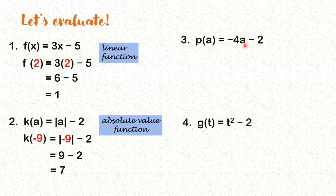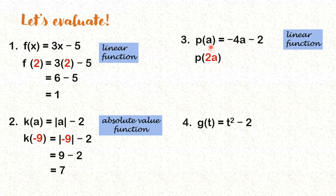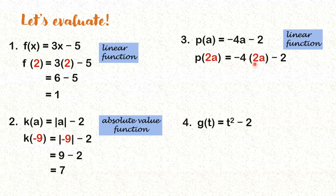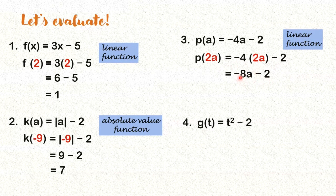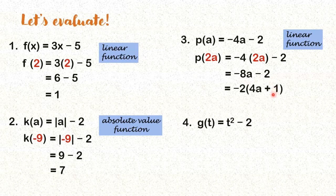Let's now have number 3. What kind of function is this? Kita niyo ba yung variable? Anong exponent niya? 1. So definitely this one is a linear function. We get P of 2A. So yung A na nakikita niyo dito, papalitan lang natin ng 2A — we substitute. So what is negative 4 times 2A? You will have negative 8A. So you have negative 8A minus 2. And then you recall factoring — pwede niyong i-factor out ang negative 2. If you factor out negative 2, magiging positive 4A. Tapos pag kinuha ko ang negative 2, magiging plus 1. So ito yung expression ng inyong P of 2A.